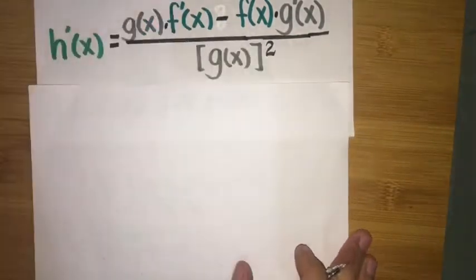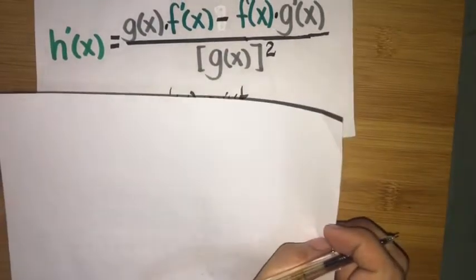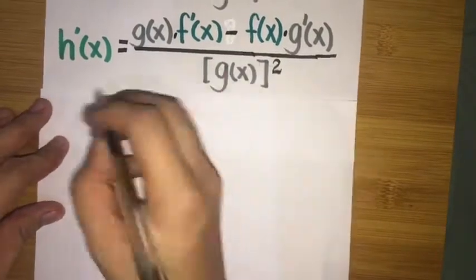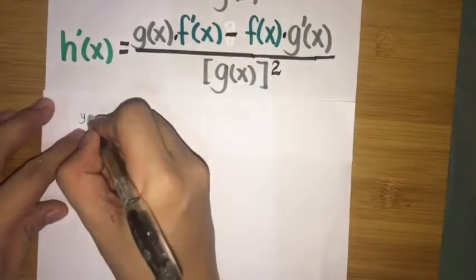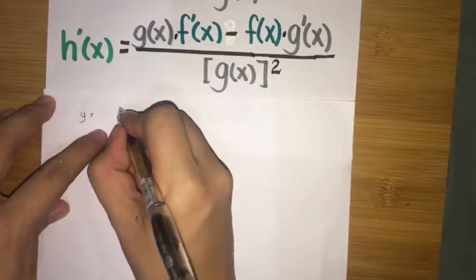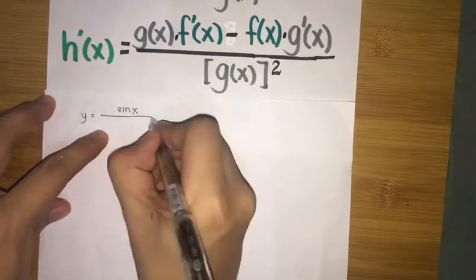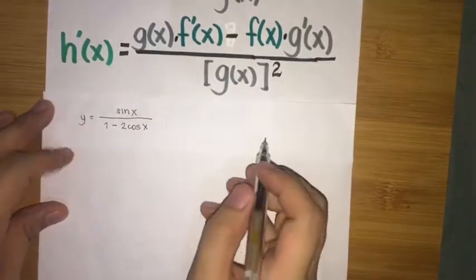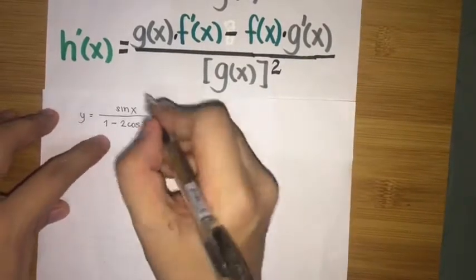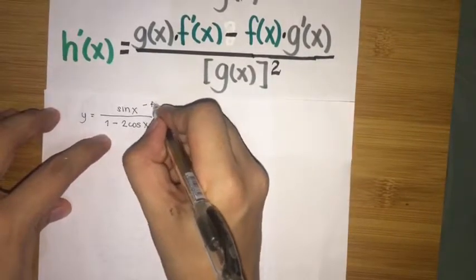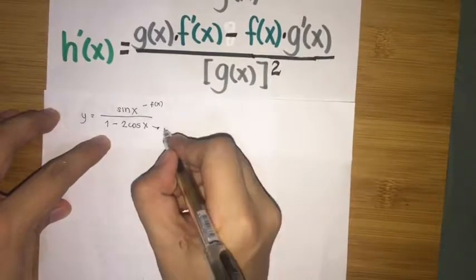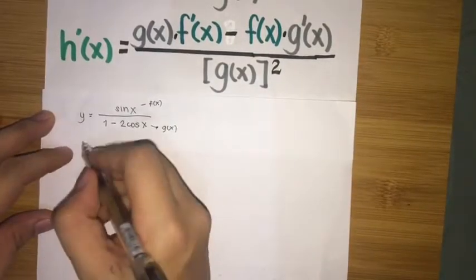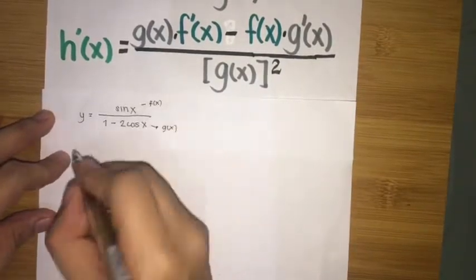Now let's proceed to another example. We have y equal to sin x over 1 minus 2 cos x. Again, let's take sin x to be our f of x and the quantity 1 minus 2 cos x to be our g of x. We will apply the quotient rule for the derivative.